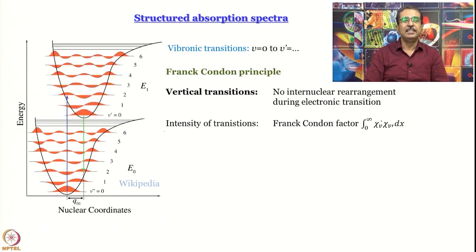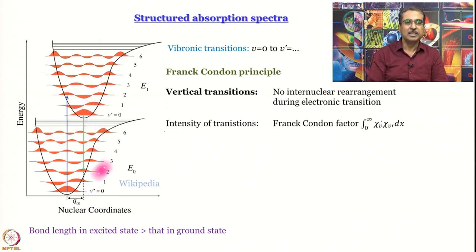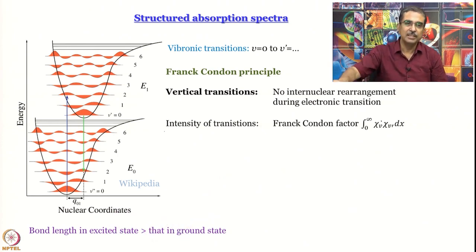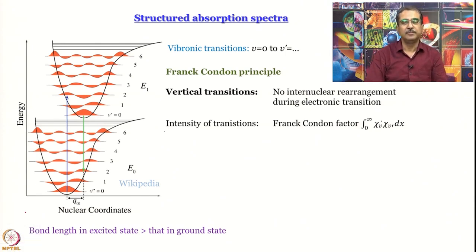Let us say this is the excited state of the diatomic molecule. The minimum of the potential energy curve indicates the equilibrium bond length. In this situation, the bond length in the excited state is greater than that in the ground state. We will discuss other situations — when they are equal, or when the excited state bond length is smaller than the ground state bond length.